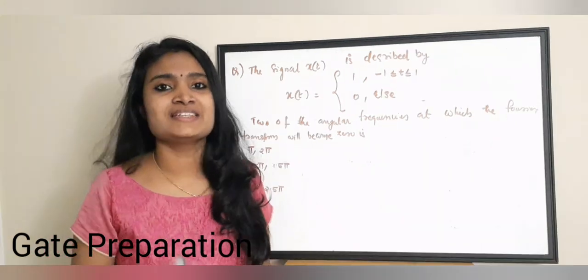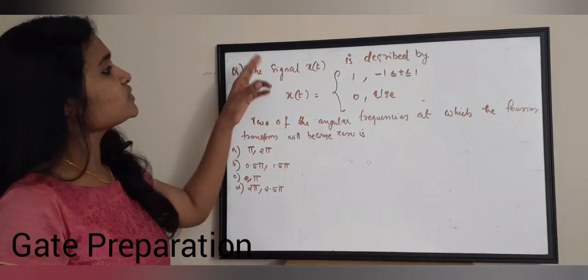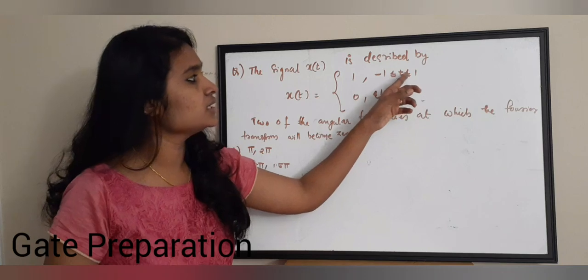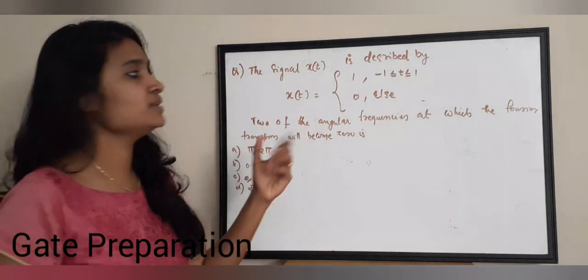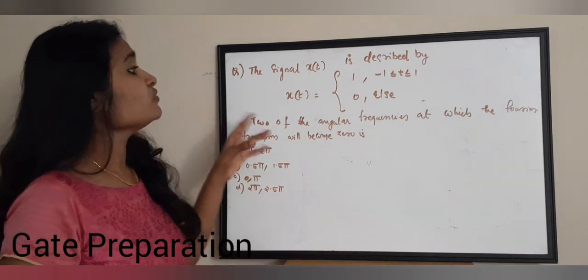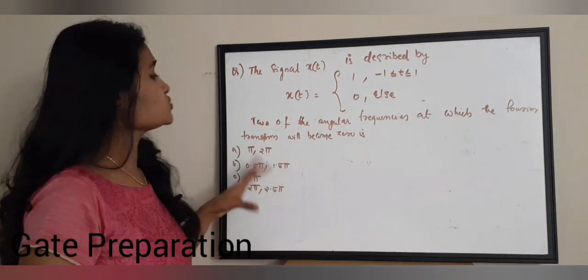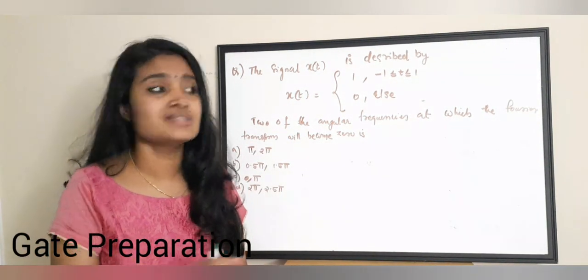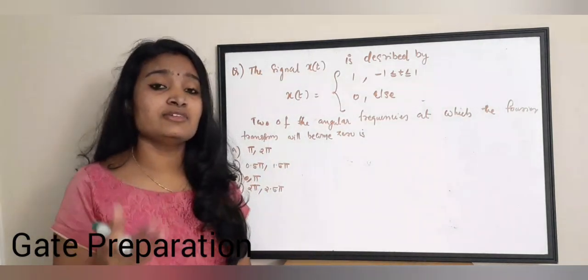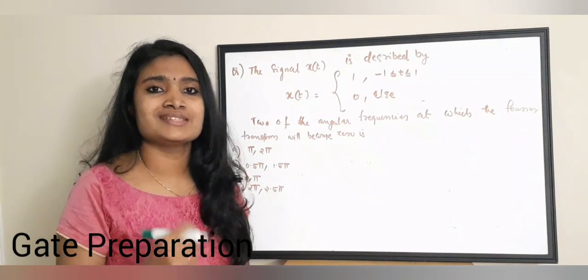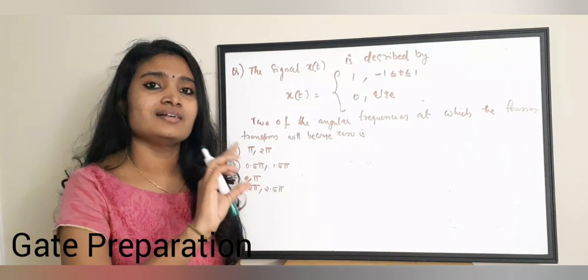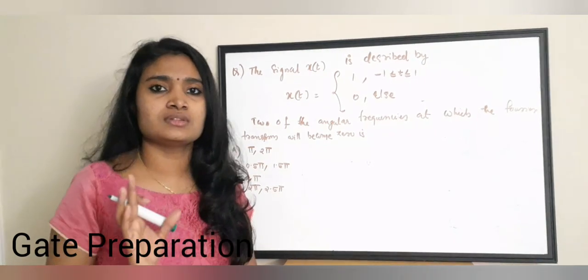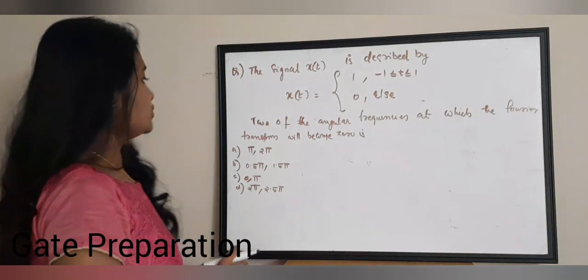The first question: the signal x(t) is described as x(t) = 1 for -1 < t < 1, and zero otherwise. We need to find the number of angular frequencies at which the Fourier transform becomes zero. You just have to find the Fourier transform of the given signal, equate the expression to zero, and find the frequency values.